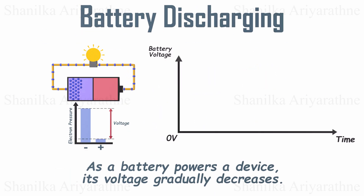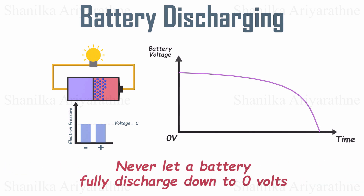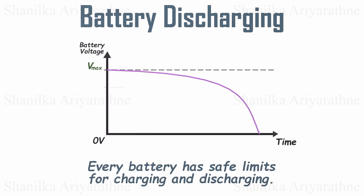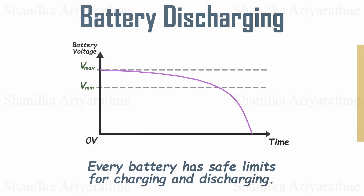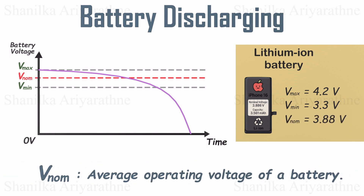There's one last piece of the puzzle we need before solving our battery problem. As a battery powers a device, its voltage slowly drops. But you should never let a battery fully discharge down to zero volts — for lithium-ion batteries, that's a very bad idea. It can damage the battery, reduce its lifespan, or even make it unsafe. Lithium-ion batteries like the ones in the iPhone 16 operate between about 4.2 volts when fully charged down to around 3.3 volts when it's time to recharge. The average working voltage used in calculations, around 3.88 volts, is called the nominal voltage.